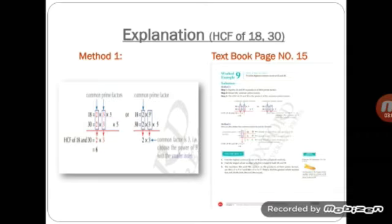On the right side, you can see that the prime factors of both numbers are written with index notation and common factors are taken out with the smallest index notation, so the common factors are the same: 2 multiplied by 3. Remember, students, for HCF, only those common factors are taken out which have the smallest index notation.